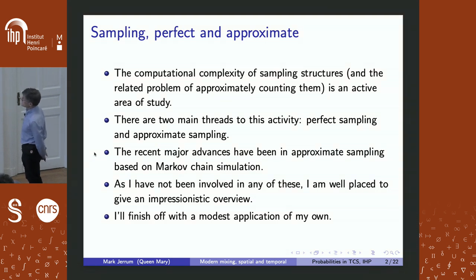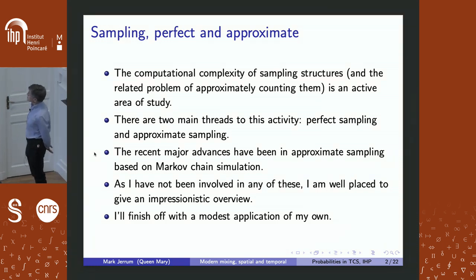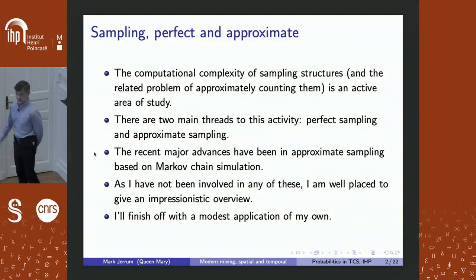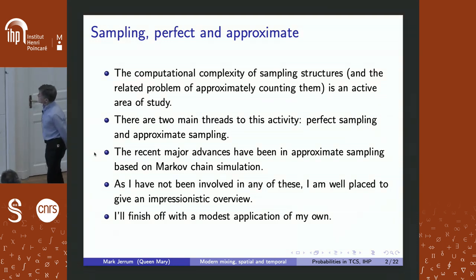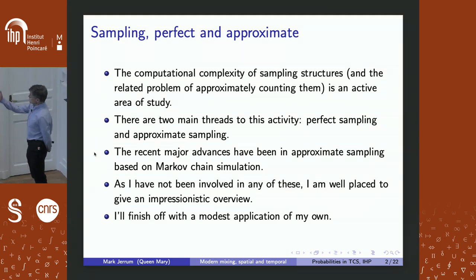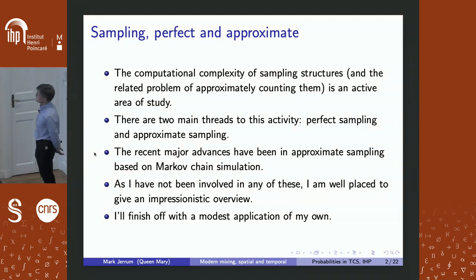This has been active for many decades, but just as you think things are settling down and getting a little bit dull, some major advances come along. There are two main threads: one is where you want samples from the exact distribution — that's perfect sampling — and then the other is approximate sampling, where you want a sample very close to the desired distribution but not exact.